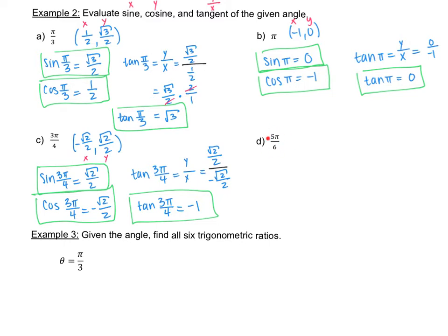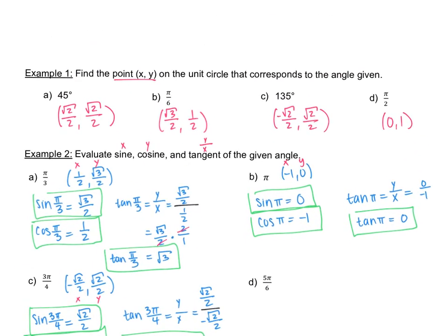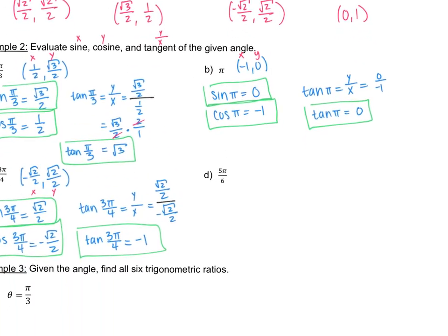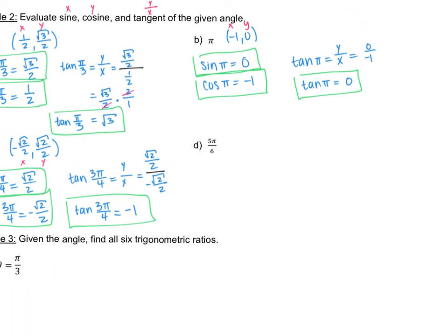Moving on to part d, this is 5 pi over 6. On the unit circle, 5 pi over 6 is in the second quadrant at 150 degrees. The coordinate is negative square root of 3 over 2 for x and positive 1 half for y. So sine of 5 pi over 6 is 1 half, and cosine of 5 pi over 6 is negative square root of 3 over 2.